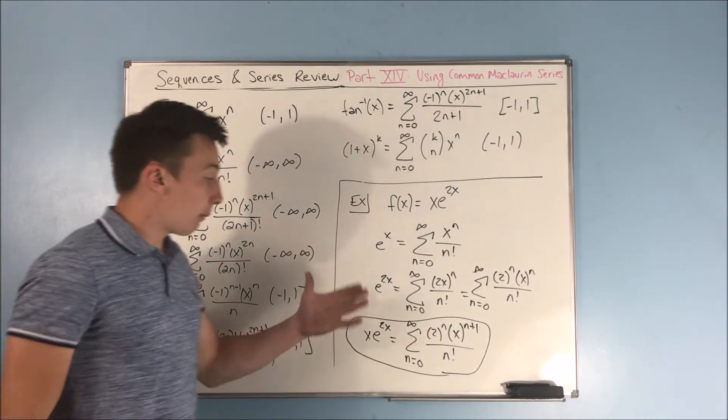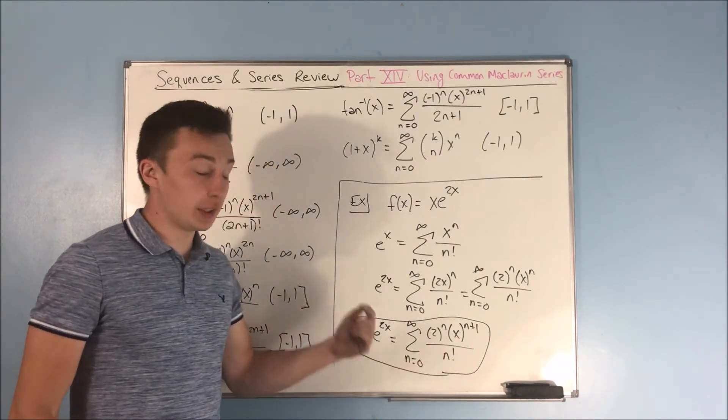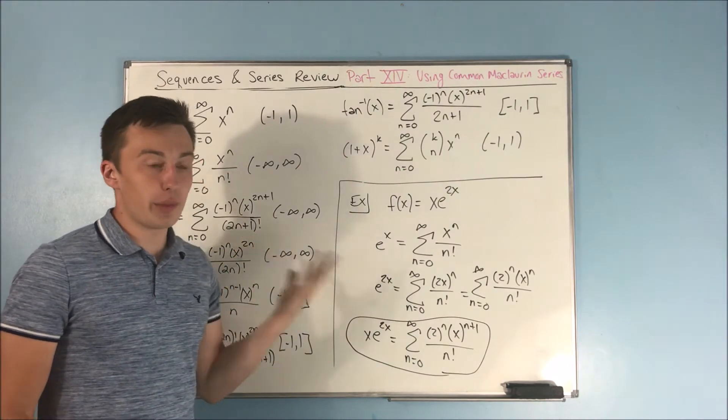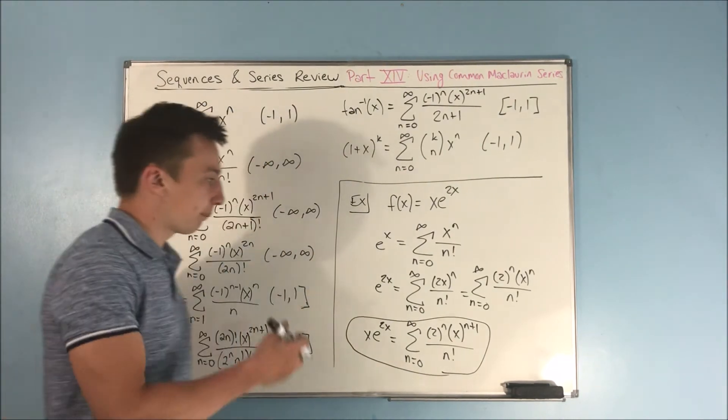We have 2 to the n times x to the n plus 1, and that's going to be over n factorial. And that is how you can come up with a Maclaurin series representation pretty fast from just using one of our common Maclaurin series that we've had some experience with before.